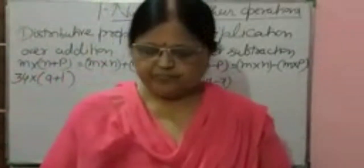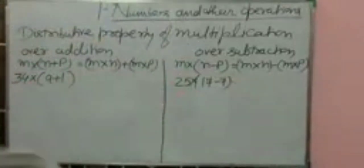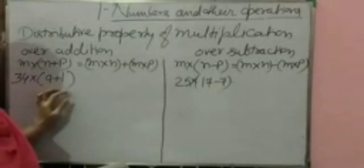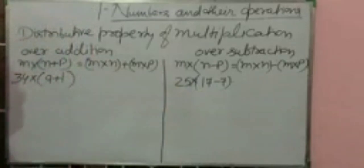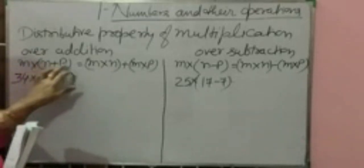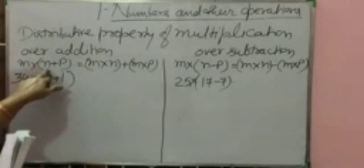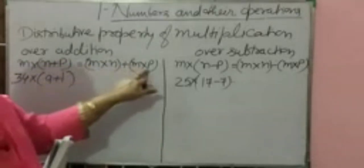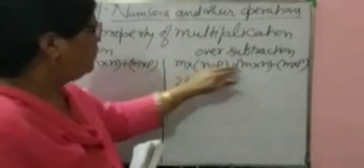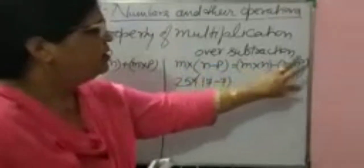Next topic: distributive property of multiplication over addition and over subtraction. Given questions are 34 multiplied by (9 plus 1) and 25 multiplied by (17 minus 7). Suppose you have three numbers M, N, and P. M multiplied by (N plus P) equals M multiplied by N plus M multiplied by P. For subtraction: M multiplied by (N minus P) equals M multiplied by N minus M multiplied by P.